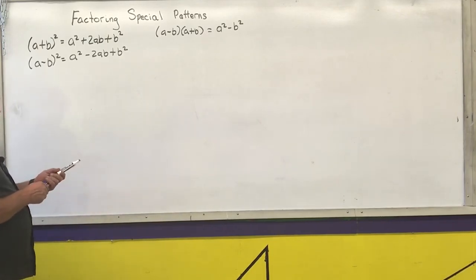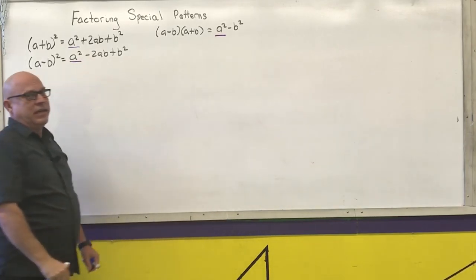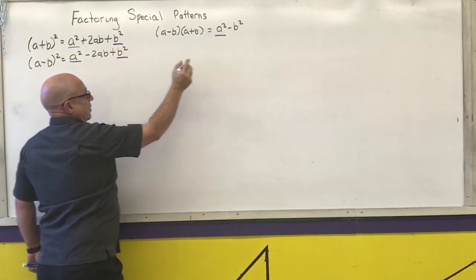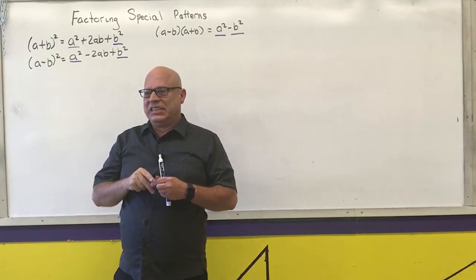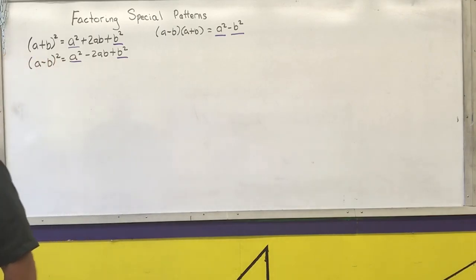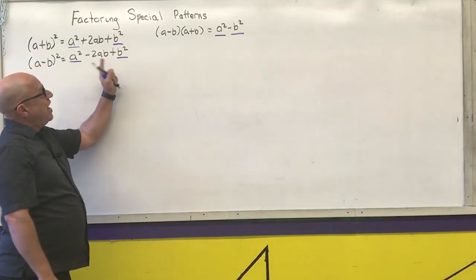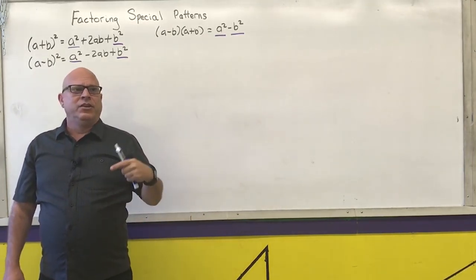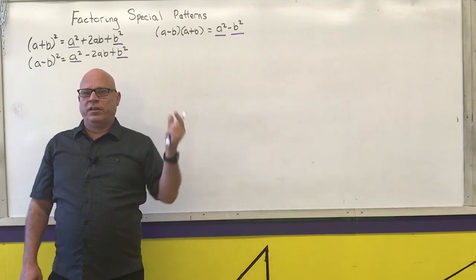Notice that in all three of these, the first term has something squared, and the last term has something squared. So what I want you to realize is that if the first and last terms are perfect squares, you want to try to look for a special pattern. You may have to factor out a greatest common factor first to get the perfect squares, but you want to see if, after factoring out a GCF, you end up with perfect squares — then try to put it into one of the patterns.